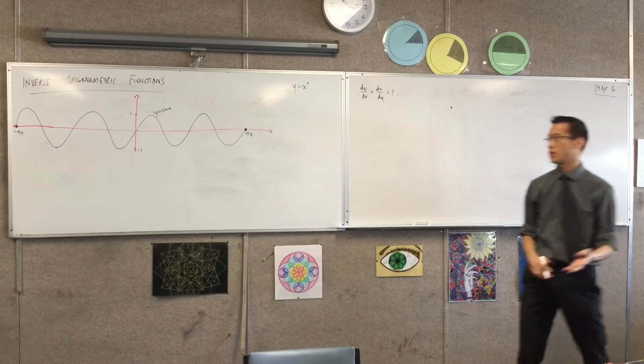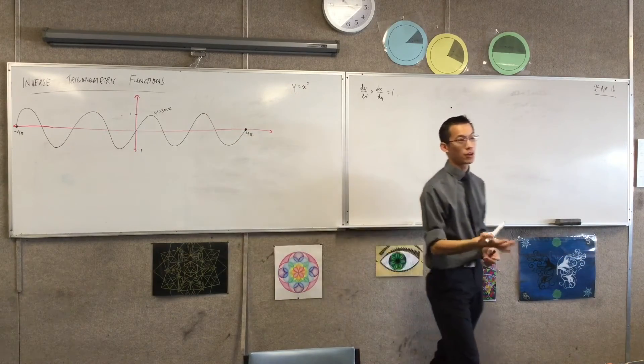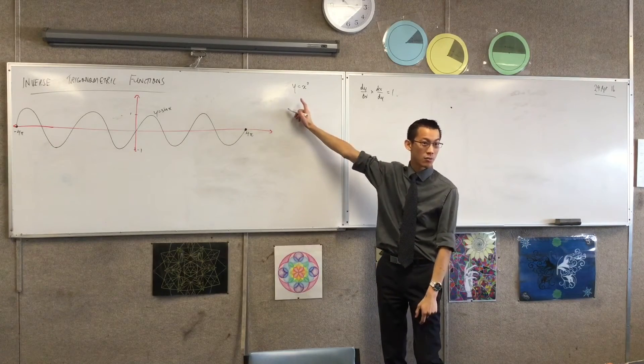It has an inverse relation right. When you do your swap you're going to get something which fails the vertical line test. So what do we do if we want an inverse function out of this? What do we do?